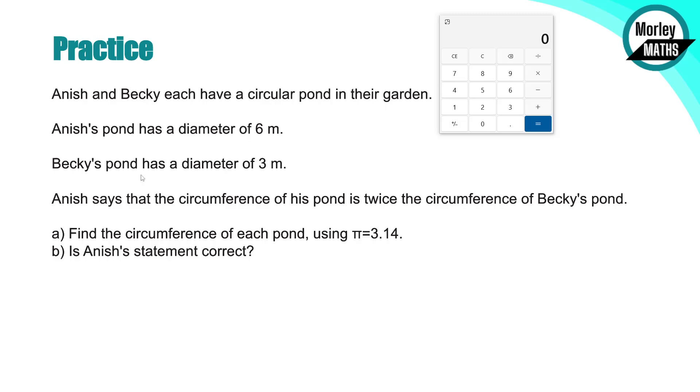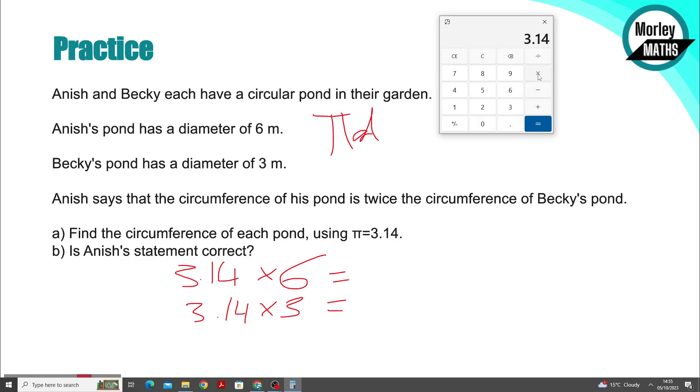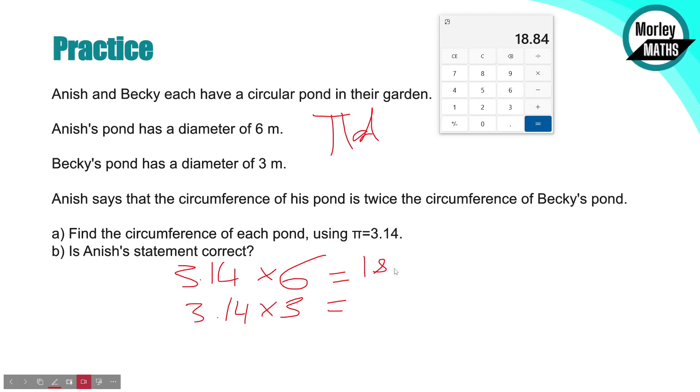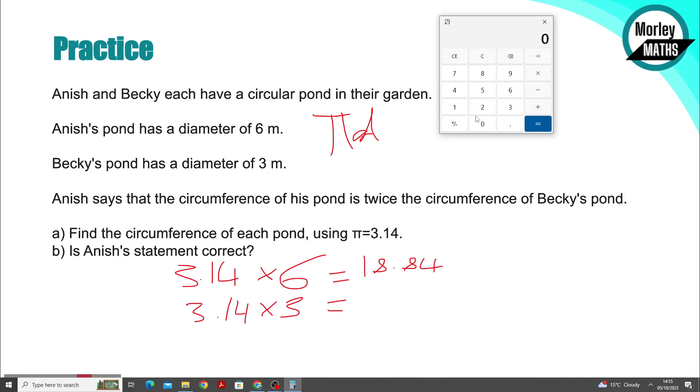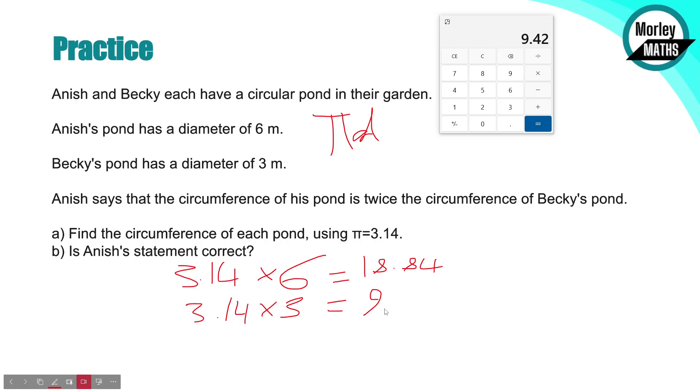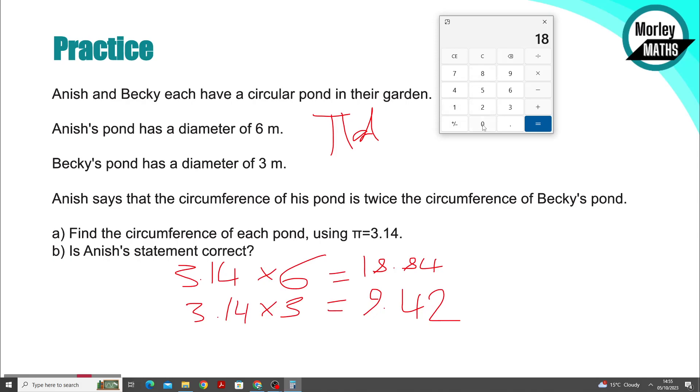We can see in terms of pi times diameter, the circumference, we've got 3.14 times 6 for Anish's pond and 3.14 times 3 for Becky's pond. 3.14 times 6 equals 18.84, and then 3.14 times 3 gives us 9.42. Now we need to see if his is twice that of Becky's. You should be able to tell just by looking at that. But what you can do is do 18.84 and divide it by 2 to see what half of that is, and you'll see it's 9.42.